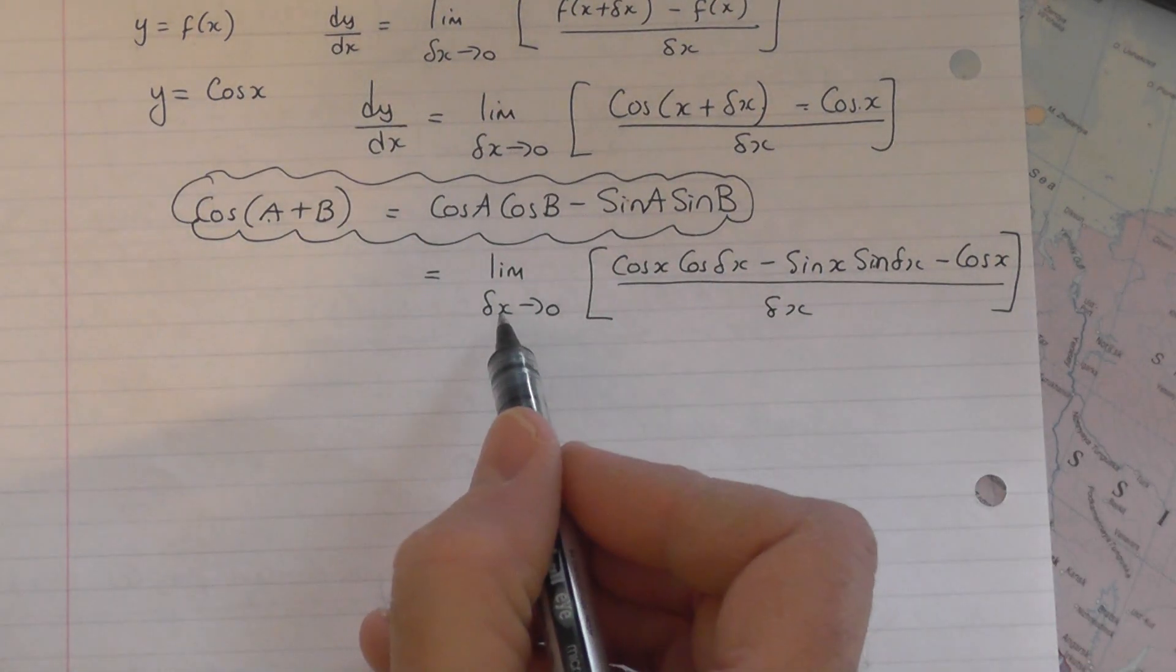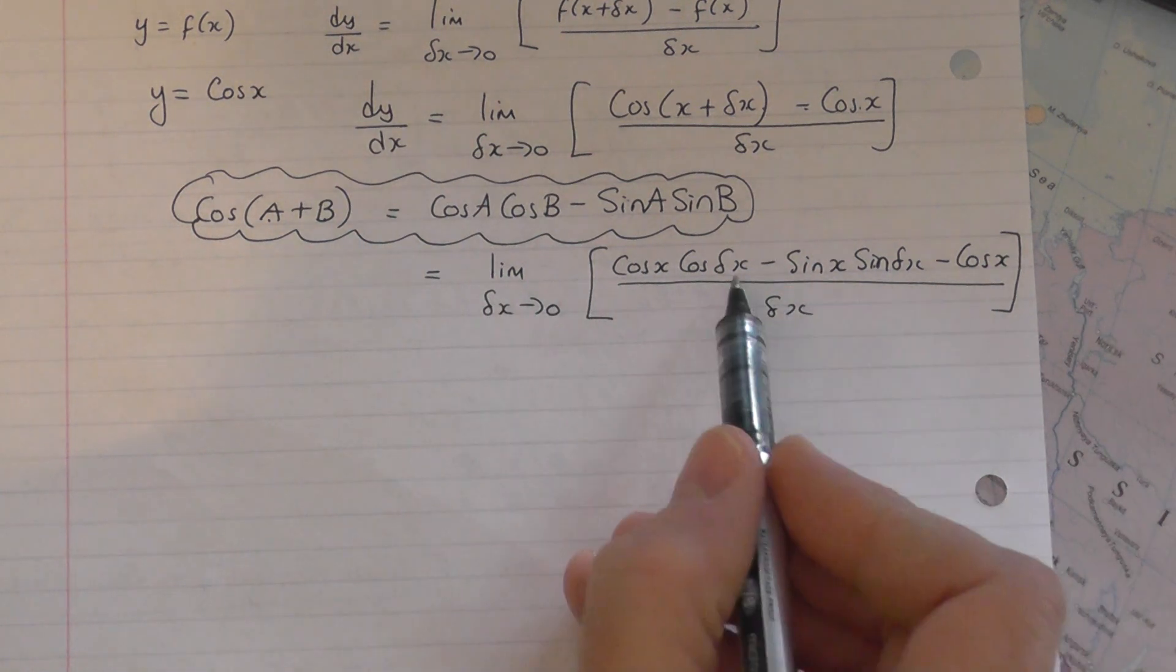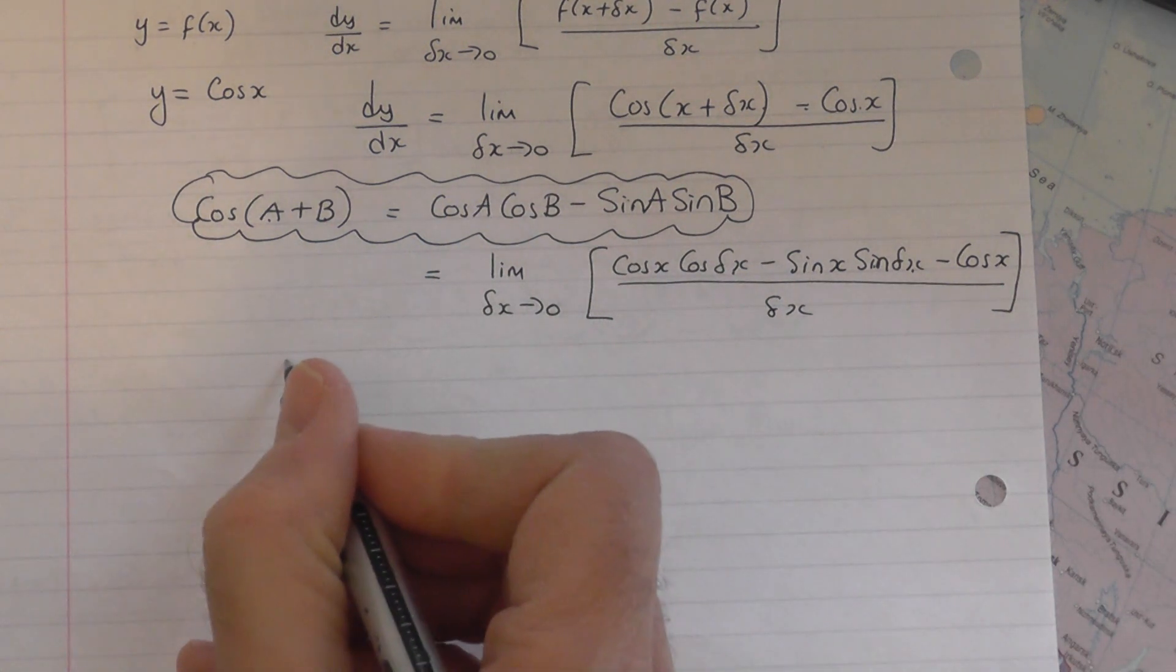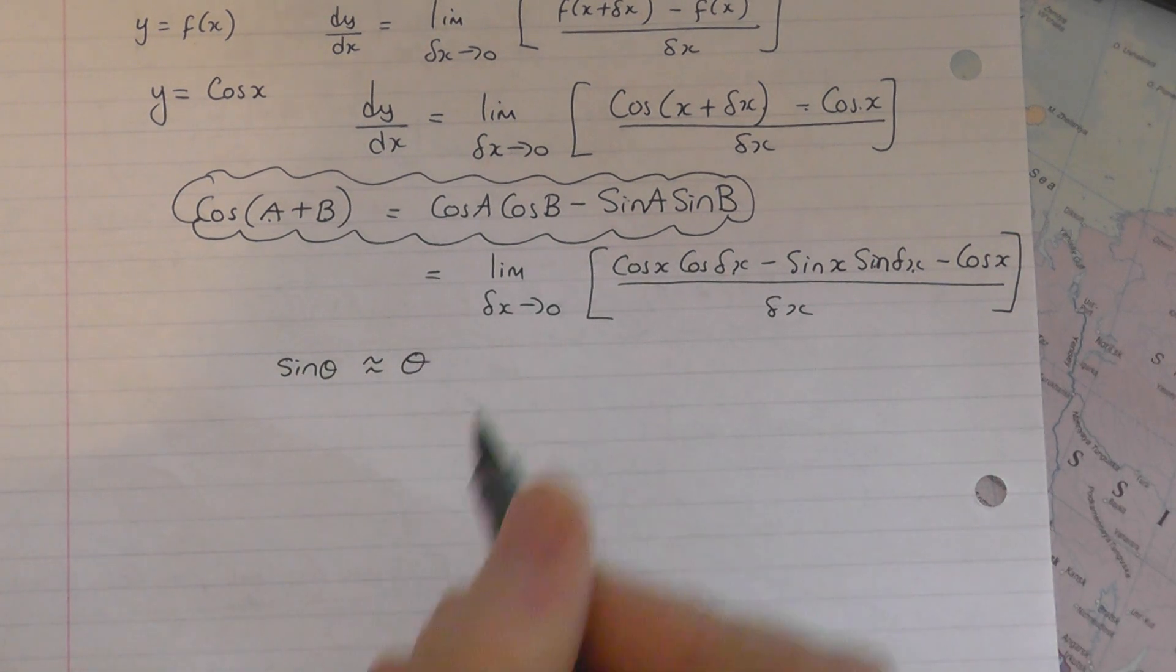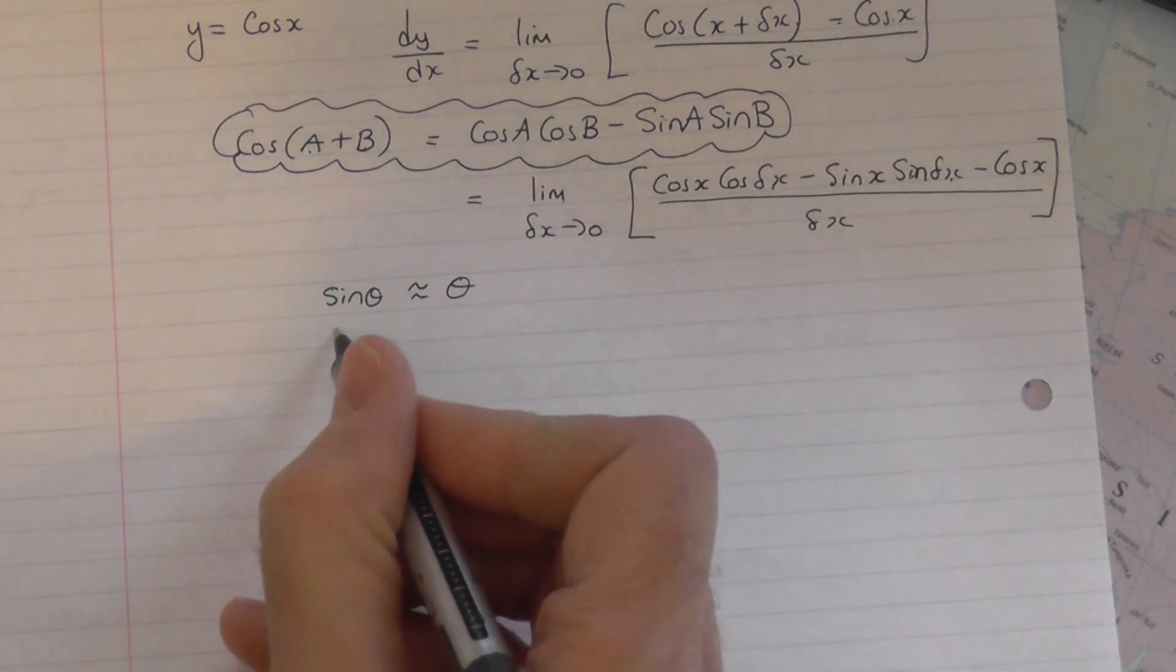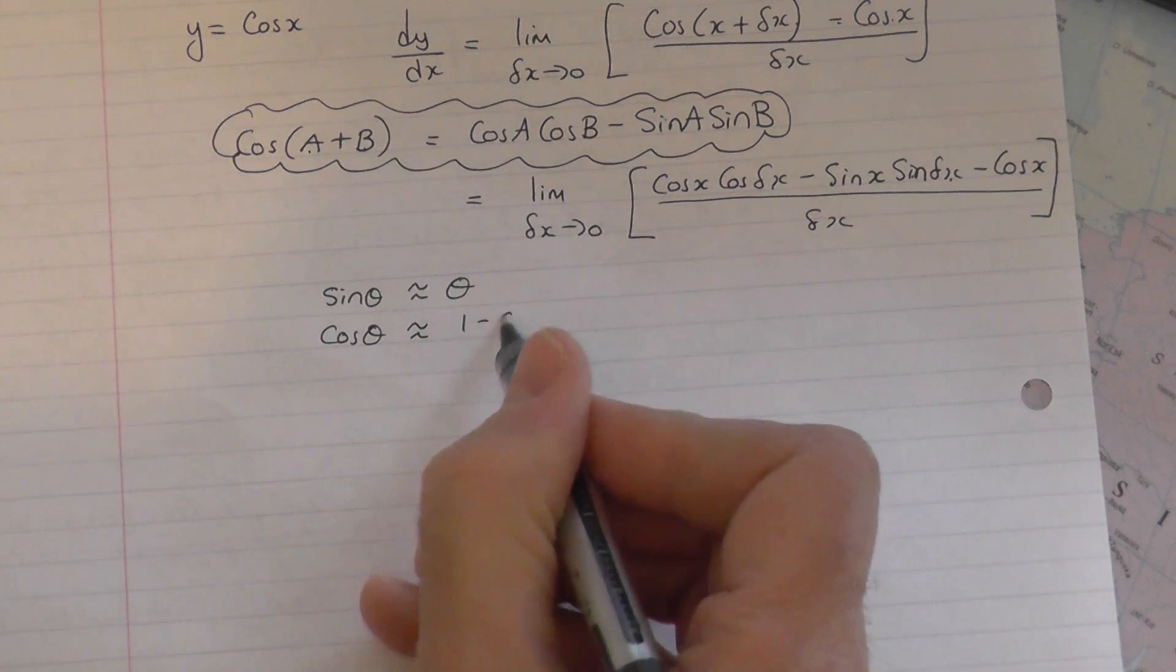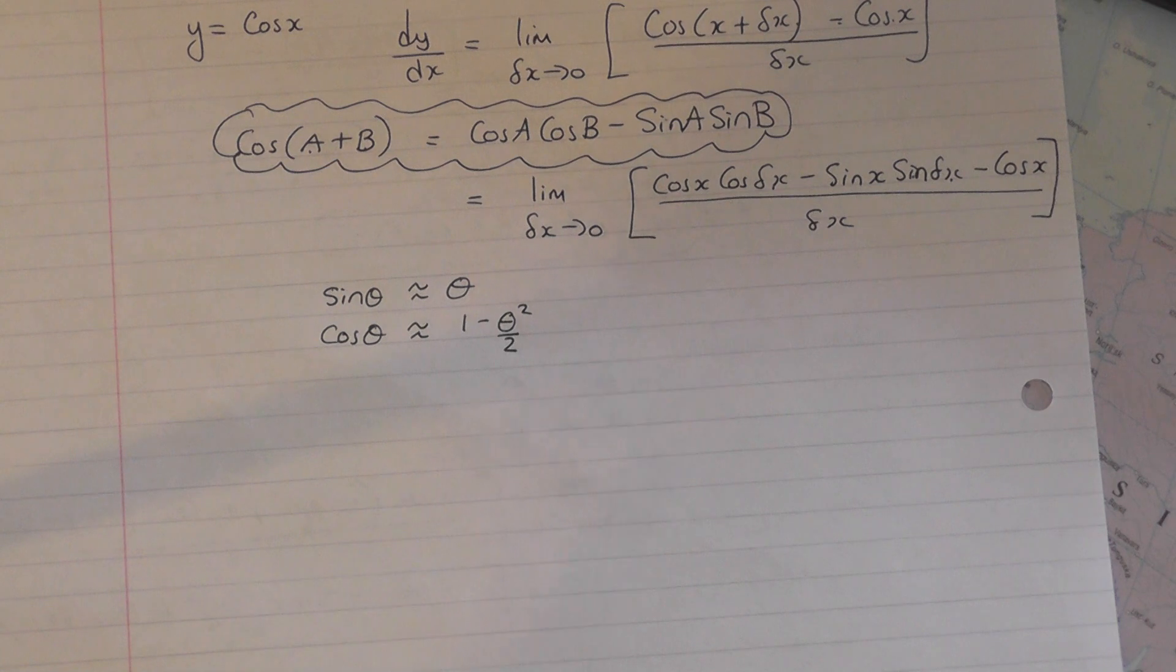We now make use of the fact that ultimately delta x is going to shrink to nothing. In other words, delta x, where it appears there and there, are going to be angles measured in radians, and they are very small because they shrink to nothing. So we make use again of this fact that the sine of theta is approximately equal to theta in rads if we're dealing with very small angles, and that the cos of theta in rads is approximately 1 minus theta squared over 2 in rads if we're dealing with very small angles.